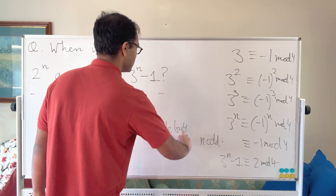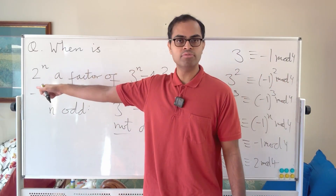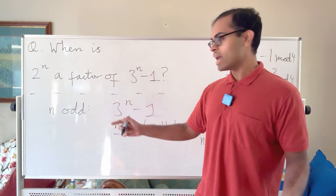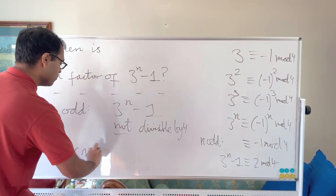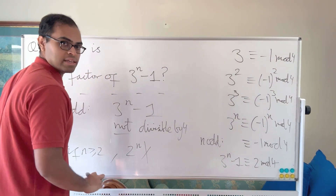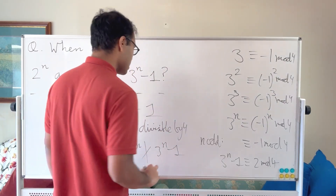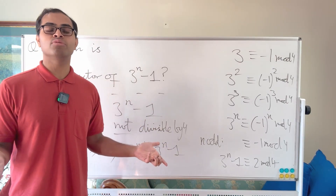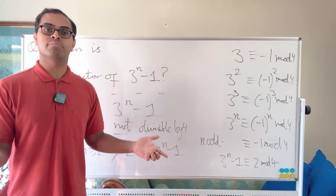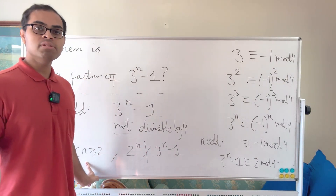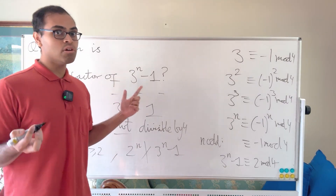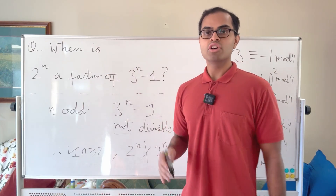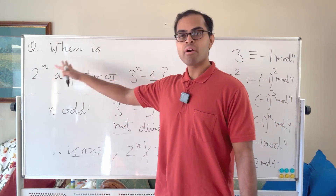Since 3^n − 1 is not divisible by 4 when n ≥ 2 and n is odd, it cannot be divisible by any higher power of 2 either (8, 16, etc., are all divisible by 4). Therefore if n is odd and n ≥ 2, 2^n is not a divisor of 3^n − 1. So the only odd value that works is n equals 1.